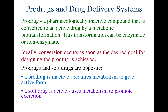A prodrug is a pharmacologically inactive compound — this is very important to note. The intact drug that you see in the pharmacy is inactive, and this inactive compound is converted to an active drug by a metabolic biotransformation. Once you take it in vivo, a metabolic biotransformation takes place, giving us the active drug inside the body. This transformation can either be enzymatic or non-enzymatic.